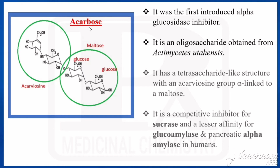They can be given as monotherapy or in combination with other anti-diabetic agents. The first drug is acarbose — the first introduced alpha-glucosidase inhibitor, an oligosaccharide obtained from Actinomycetes utahensis.